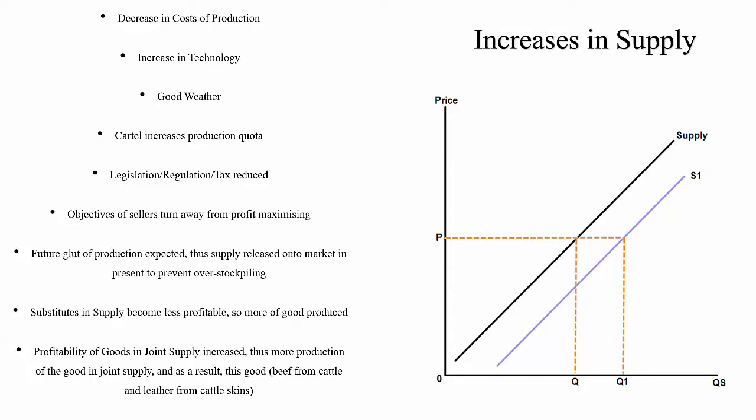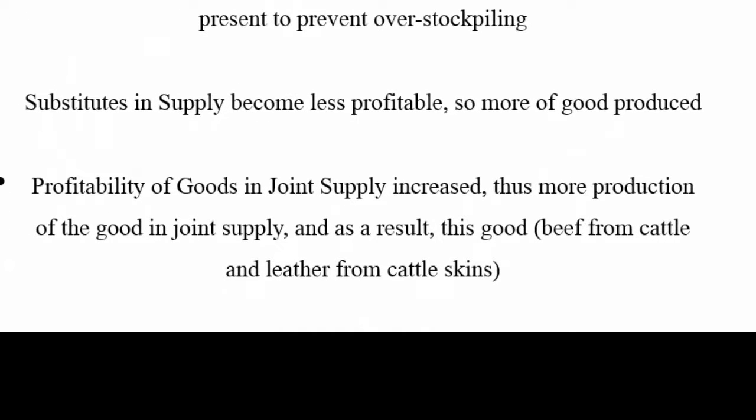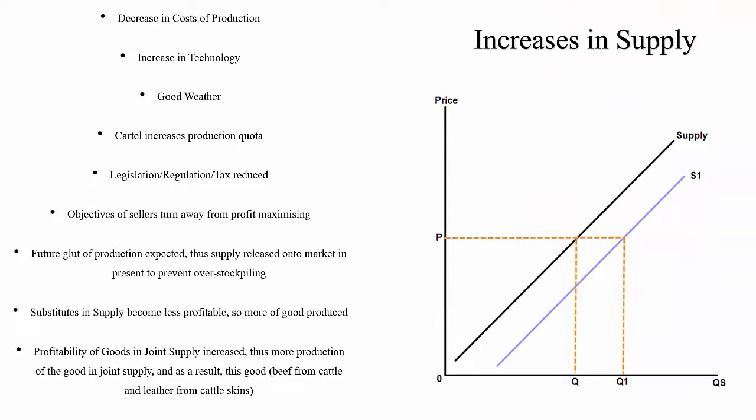Let's take another example and look at the profitability of goods in joint supply. A good in joint supply means that if you supply one good, something else is supplied with it. Let's use the example of beef from cattle and leather which also comes from a dead cow. If there was an increase in demand for beef, there would be more cattle killed to meet that demand, and the supply of leather would increase because there are more cattle being killed for beef production, so more leather to harvest.